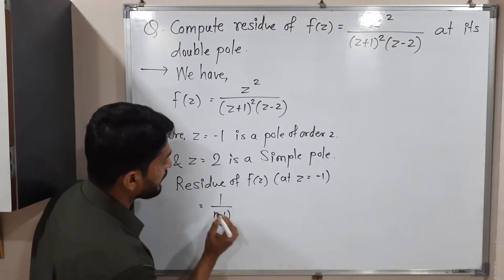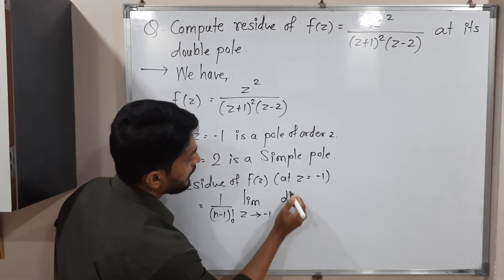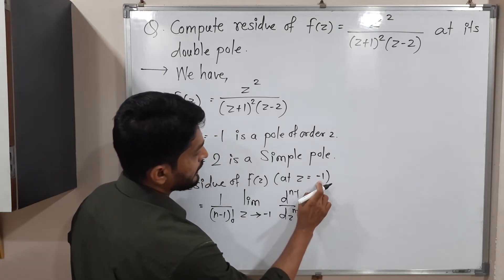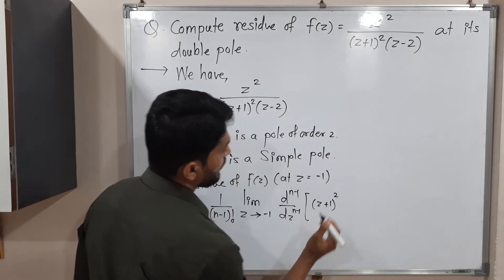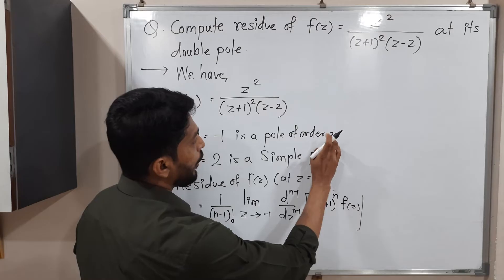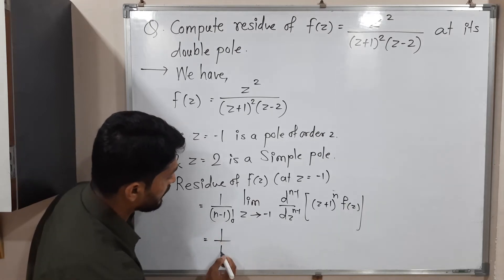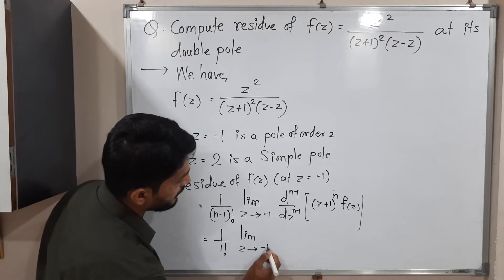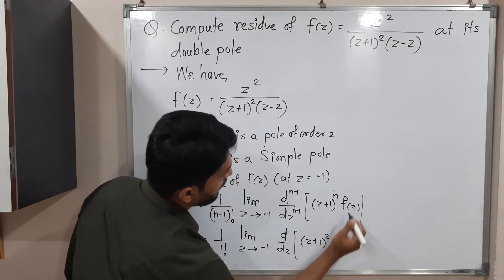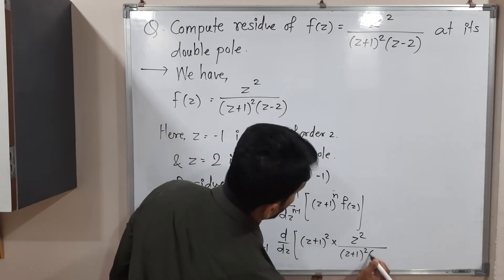The formula says: 1/(n-1)! × limit as z tends to z₀ of the (n-1)th derivative of [(z - z₀)ⁿ f(z)]. Here z₀ = -1. So let us put n = 2 everywhere. This equals 1/1! × limit z tends to -1, first derivative of [(z+1)² f(z)]. What is f(z)? We substitute z² / [(z+1)²(z-2)]. The (z+1)² cancels, leaving us with the derivative of z²/(z-2).